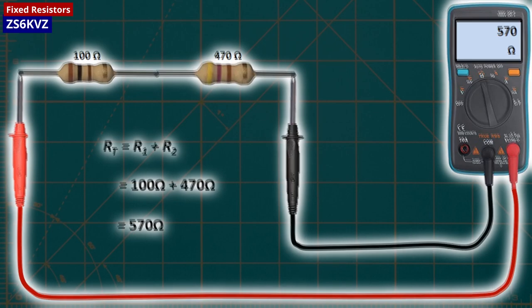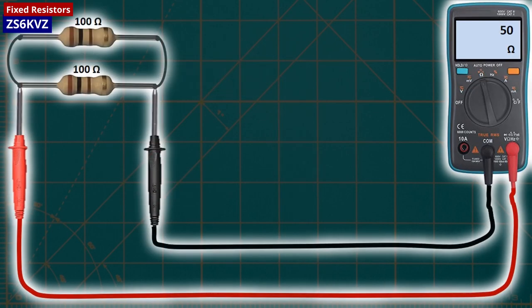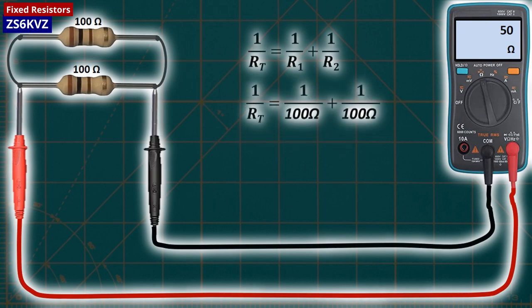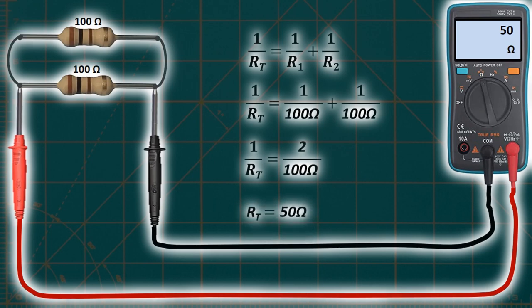Conversely, if we need lower resistances, we can connect resistors in parallel because, in parallel connections, the equivalent resistance is equal to the sum of the inverse of resistors. For example, if we connect two 100 ohms resistors in parallel and measure the total resistance using a multimeter, we will see a total value of 50 ohms, which is the inverse of the sum of resistors.